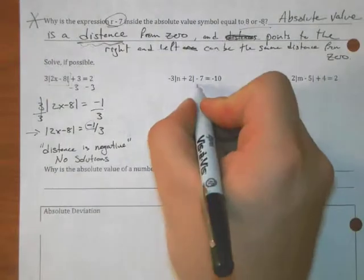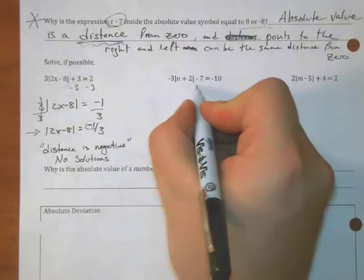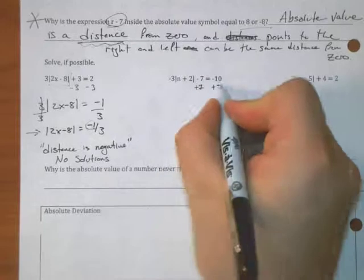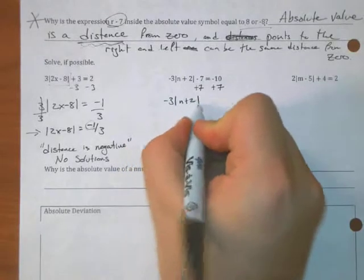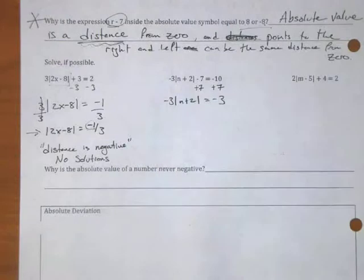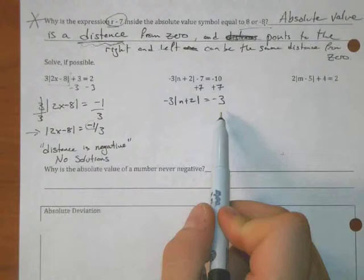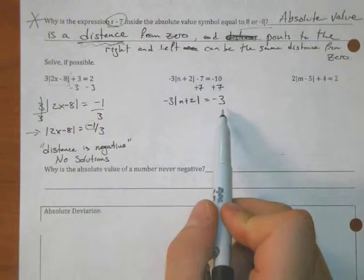All right, so let's try and maybe look at this one. If I want to solve this, let's add 7 to both sides, get this thing. And oh man, we're in trouble because we have a negative distance. So this has got to be a no solution.